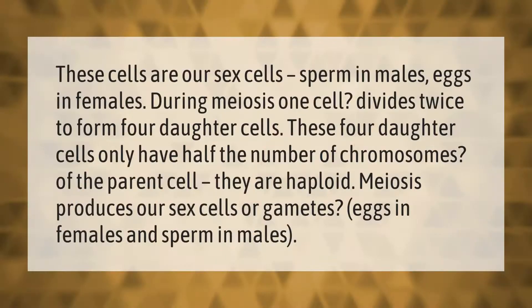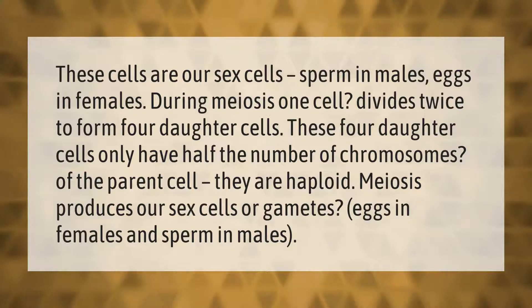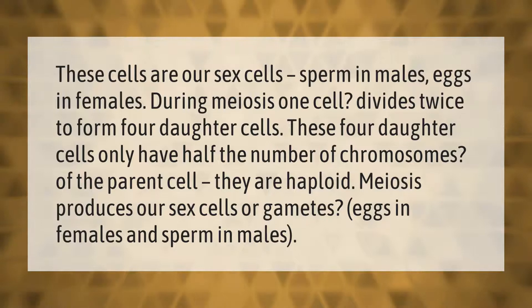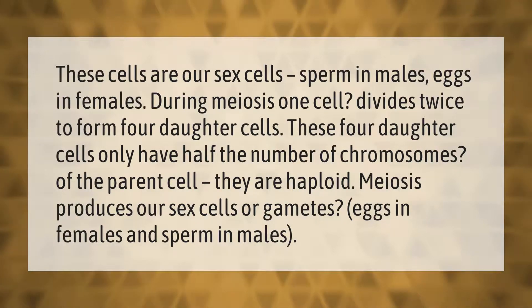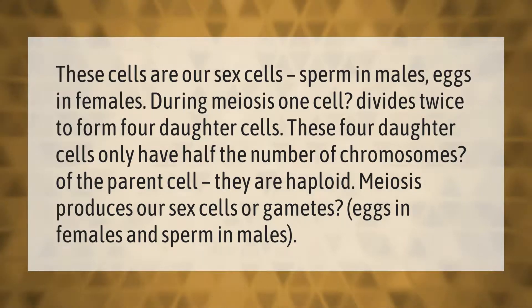These cells are our sex cells — sperm in males, eggs in females. During meiosis, one cell divides twice to form four daughter cells. These four daughter cells only have half the number of chromosomes of the parent cell; they are haploid. Meiosis produces our sex cells or gametes — eggs in females and sperm in males.